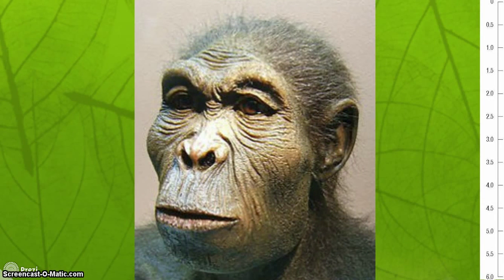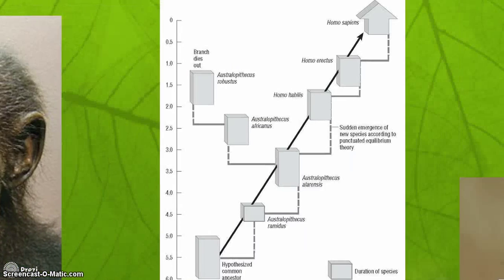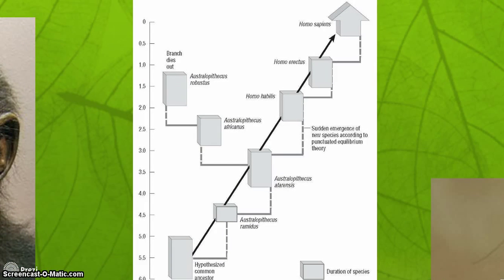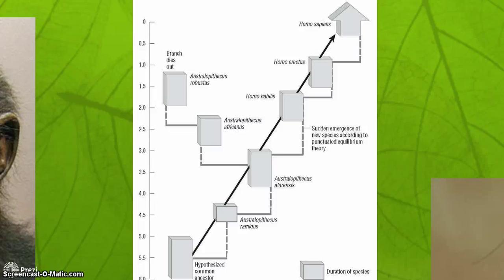This is a picture of a possible artist's rendering of Homo erectus. Here you see the evolutionary chain coming from Australopithecus to the sudden emergence of new species according to punctuated equilibrium theory, which included Homo habilis — the tool-making hominid — then Homo erectus, which had the ability to stand upright, and Homo sapiens.